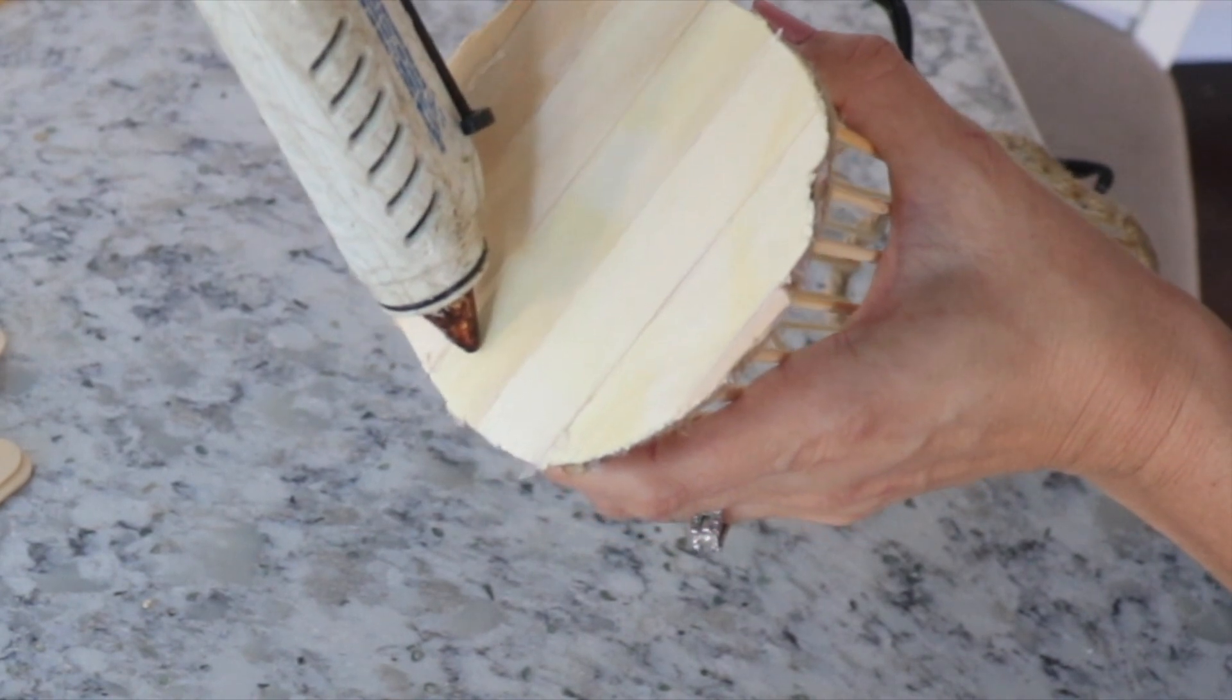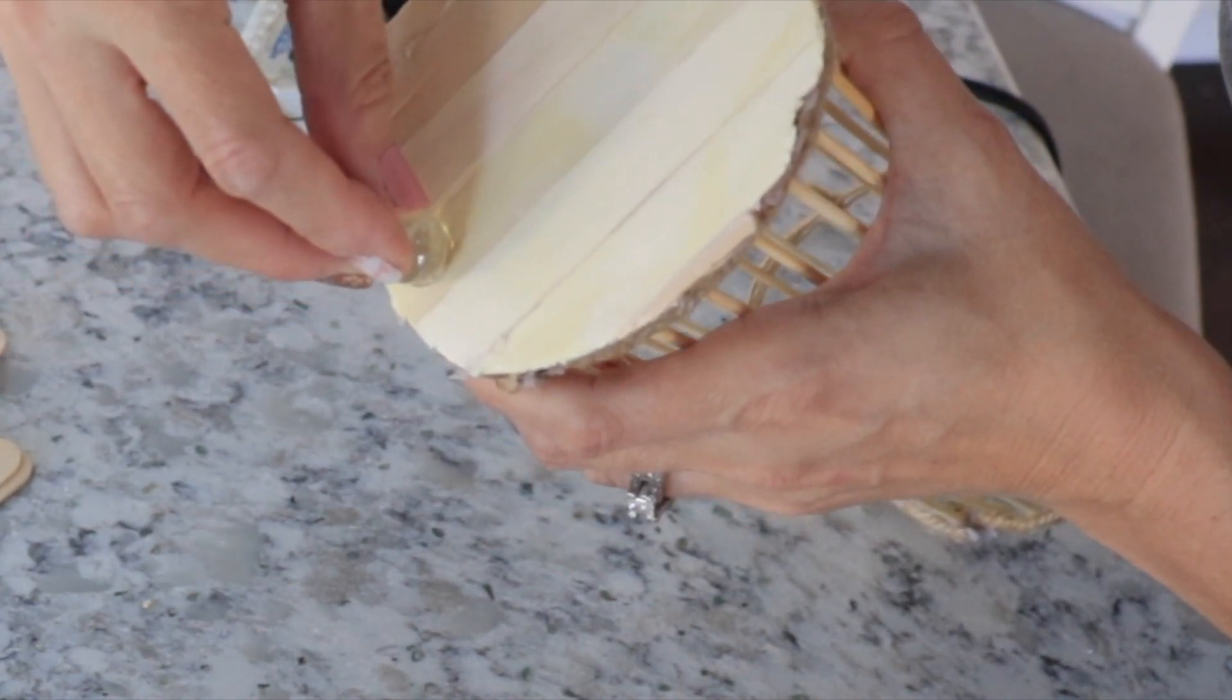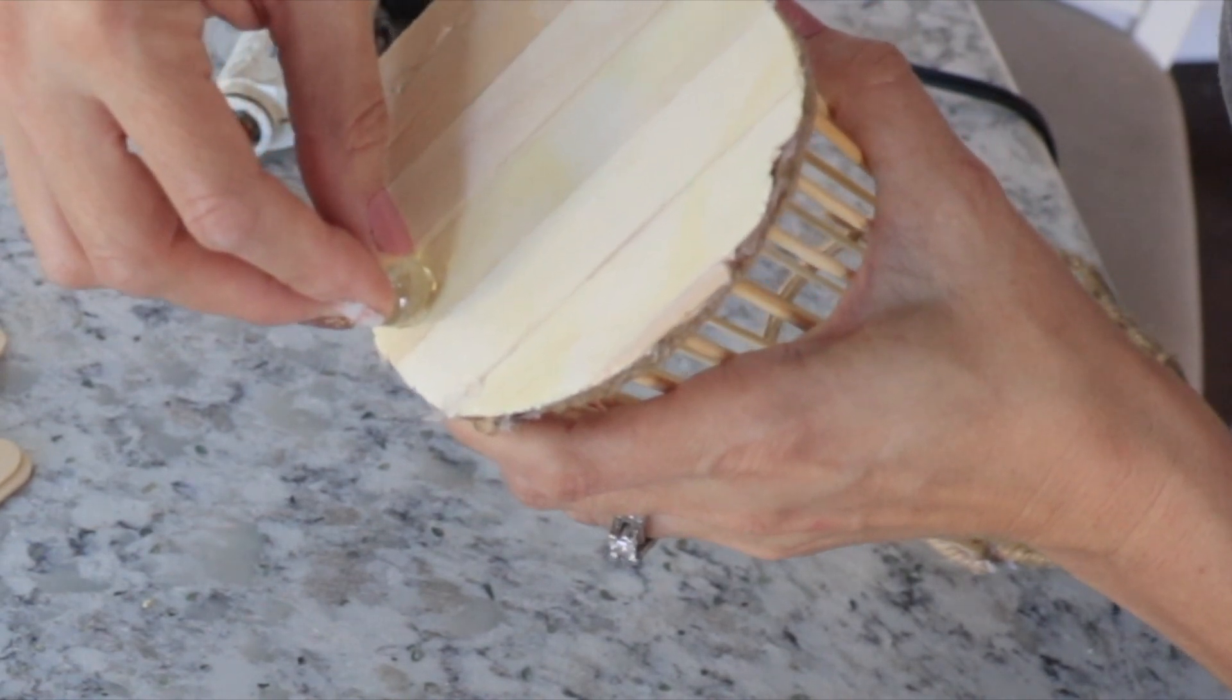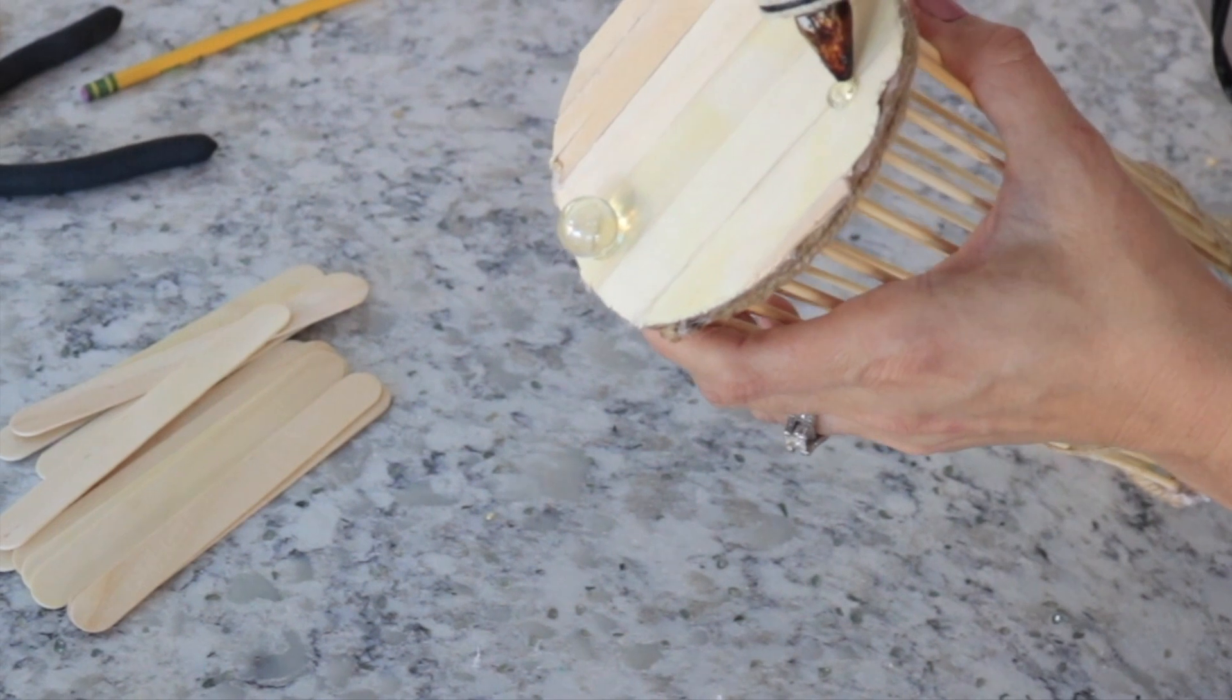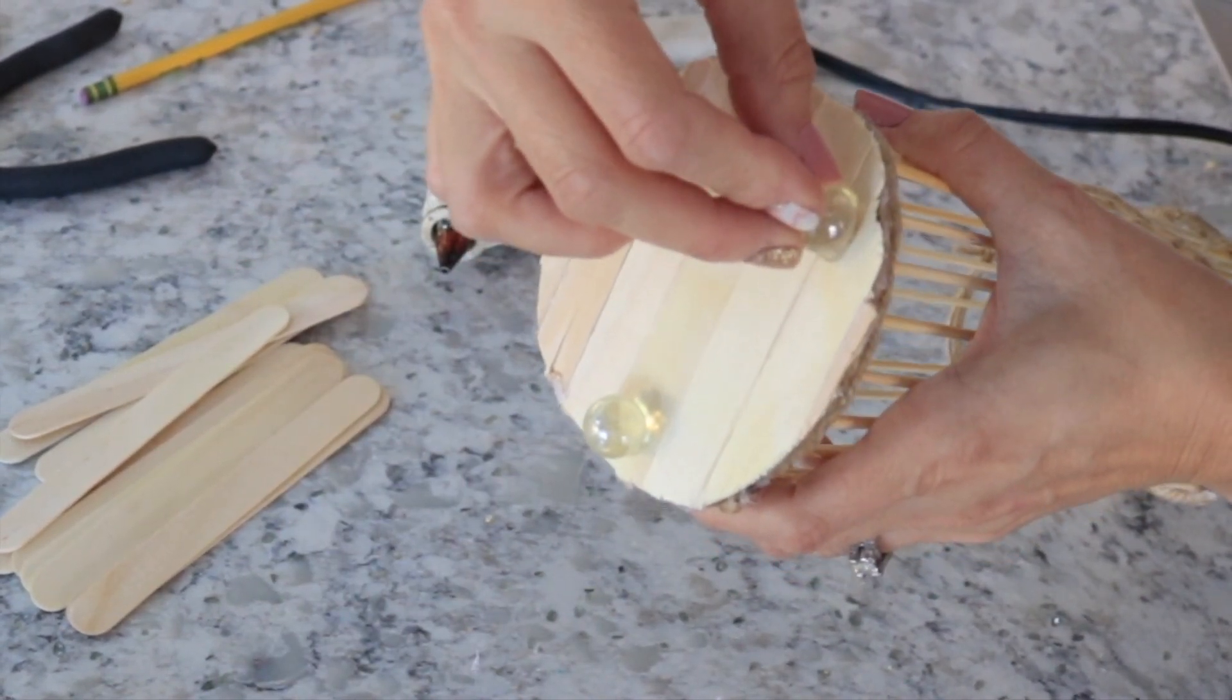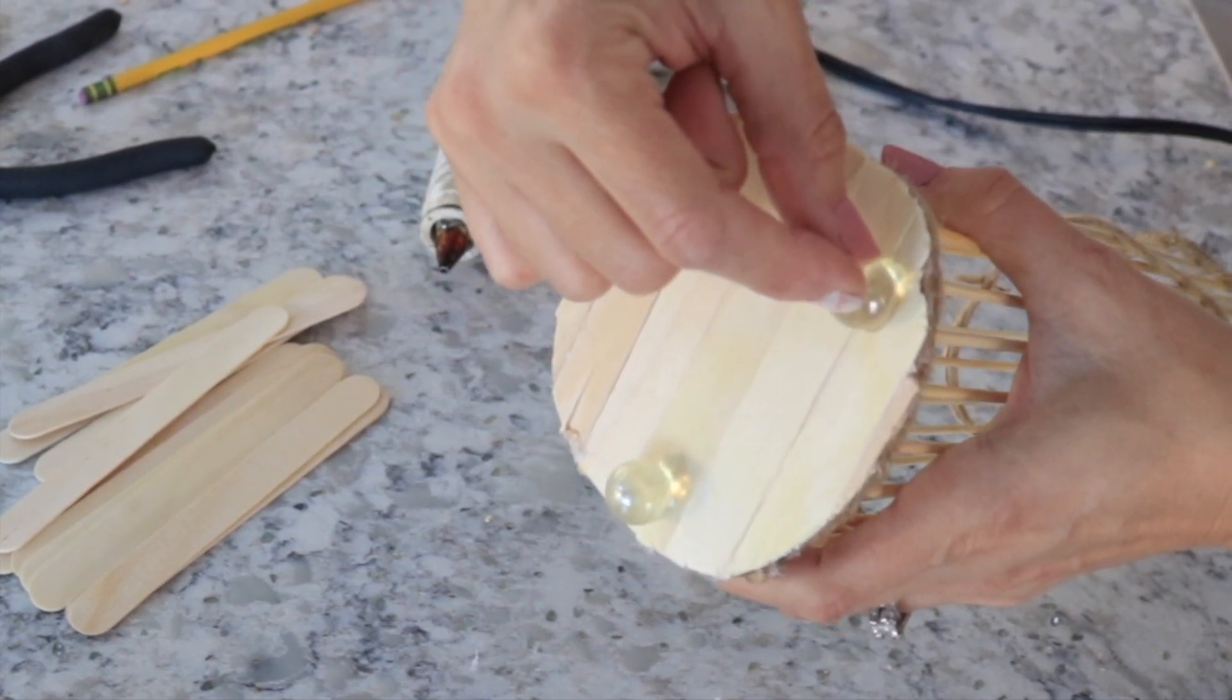Next I'm taking some marbles and gluing those at the bottom for the base. Originally I had wanted to use some little wood pieces, but I didn't have any and I didn't feel like running back to Dollar Tree to look for some. So my daughter found these marbles and these actually worked out perfect. So I just glued three of them to the bottom to act as the base.